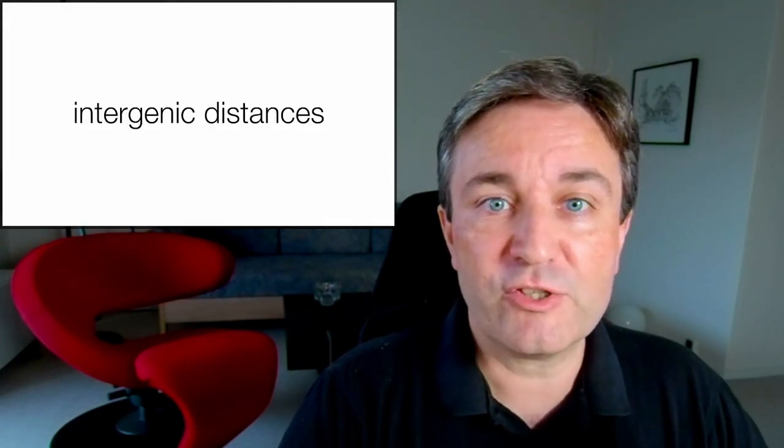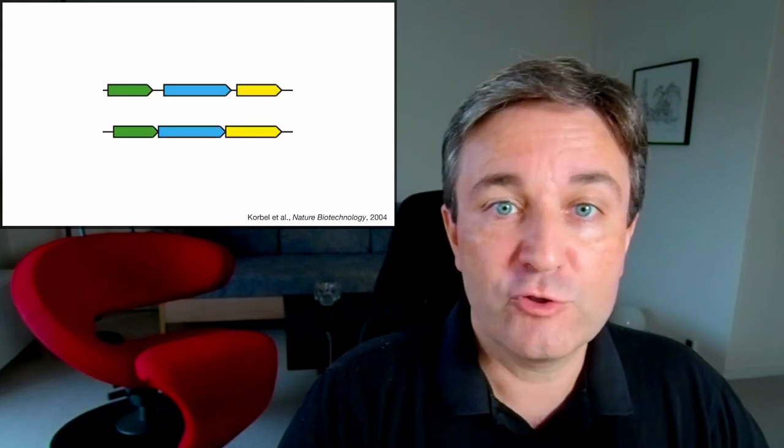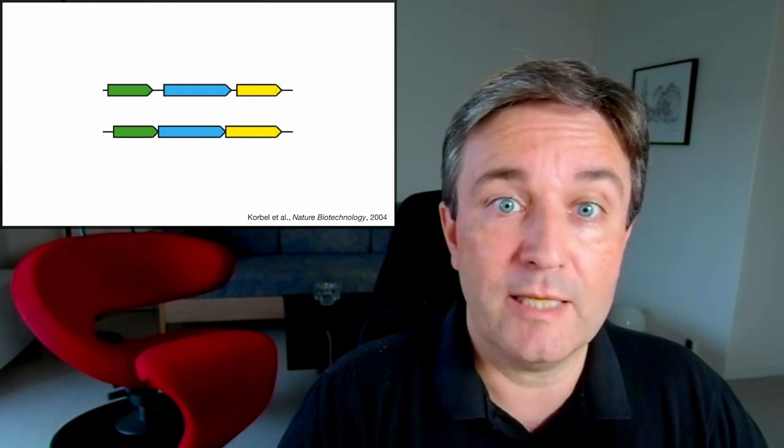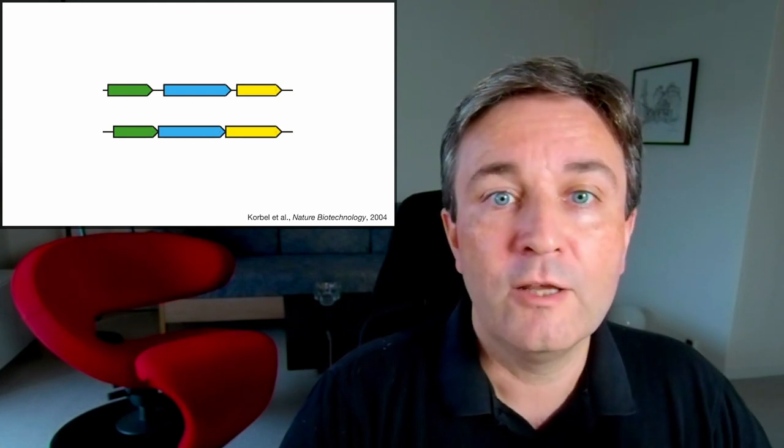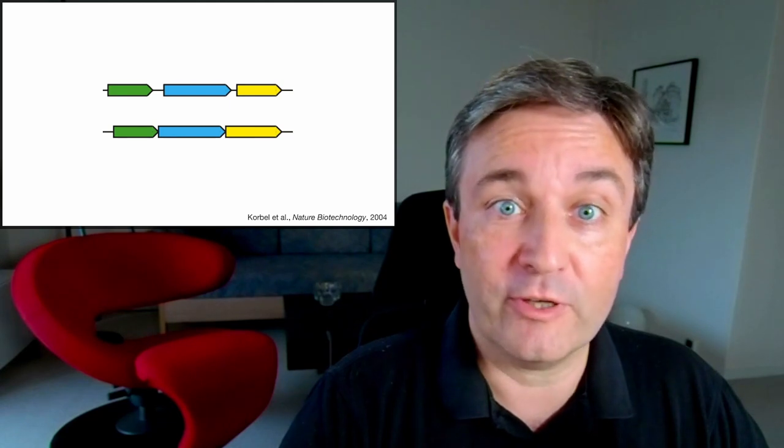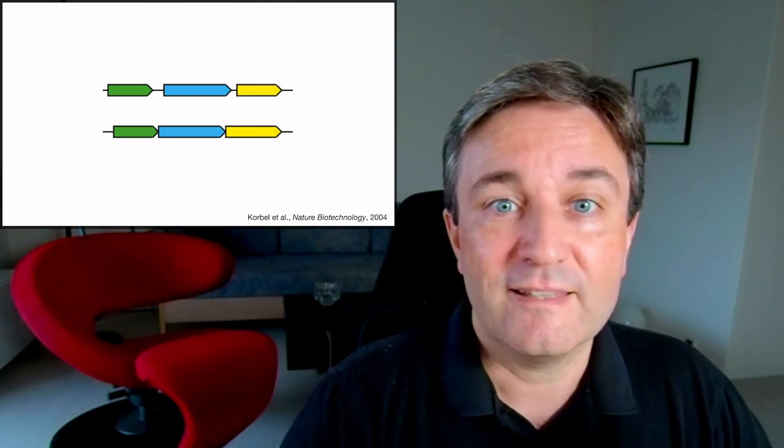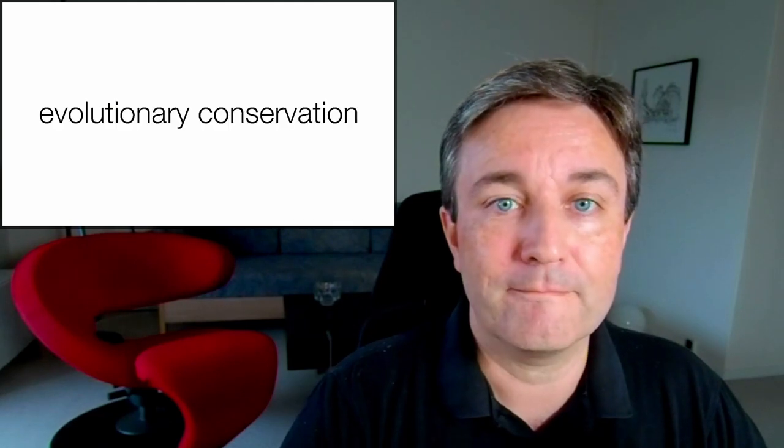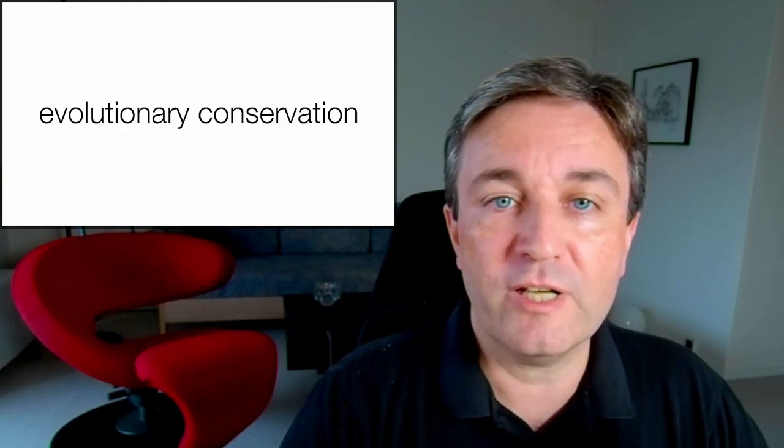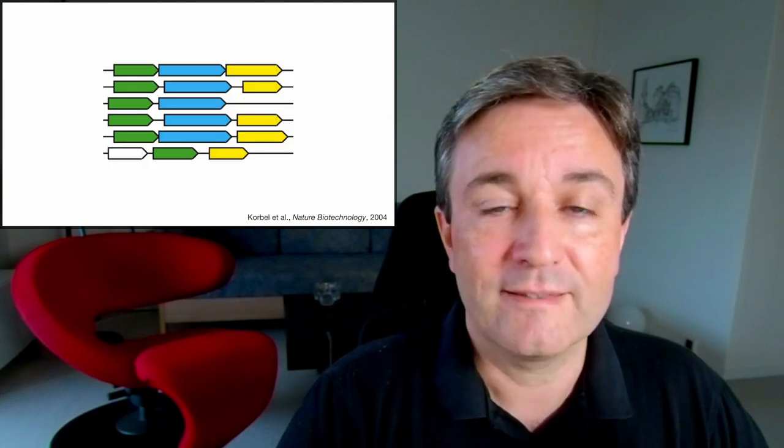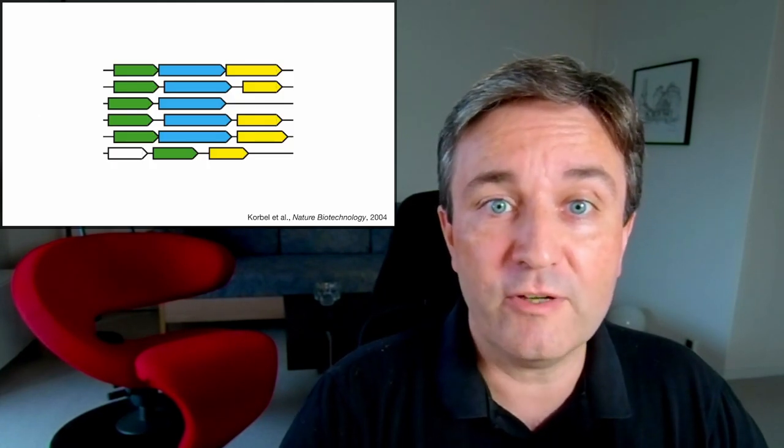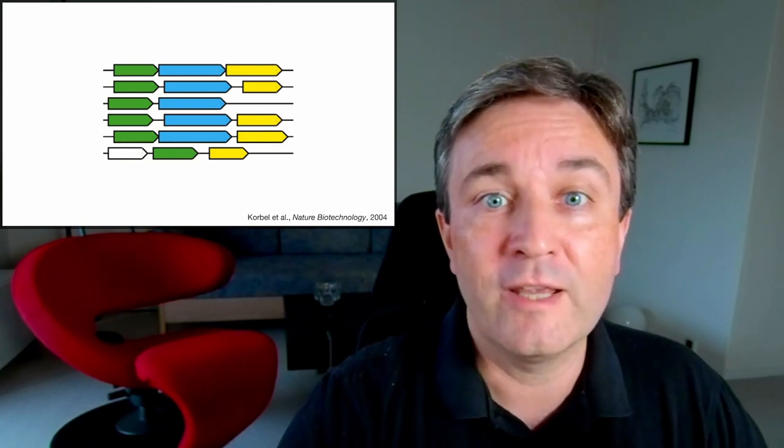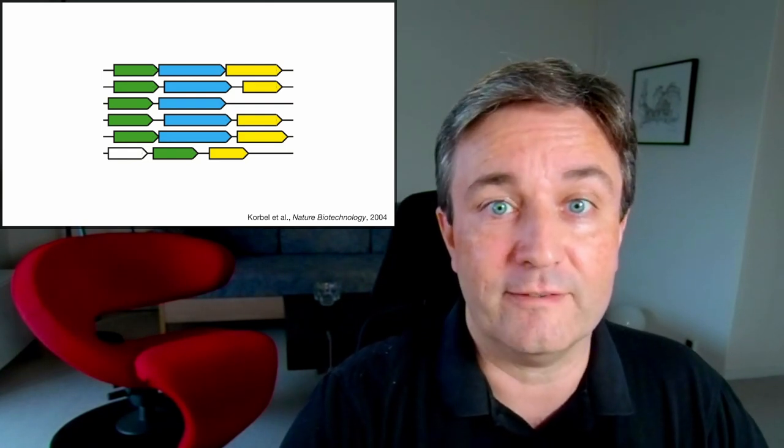One way to address this is to look for intergenic distances. If two genes sit far from each other, there might be a promoter in between, and they may not be an operon. Conversely, if two genes sit very close to each other, like in the lower example, there's no space for a promoter and they almost have to be an operon. The other option is to look for evolutionary conservation of the operons. That is, look across a number of different genomes and see if it is evolutionarily conserved over long distances that these genes sit together in runs.